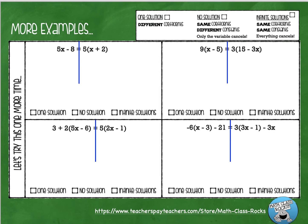Let's look at some more problems. If you're already feeling confident, why don't you try to do these four on your own right now, then restart the video to check the answers with me. If you want to watch another example first, stop and start the video whenever you feel comfortable. Here we go: 5x minus 8 — that is already simplified, there is no distributive property and no like terms.